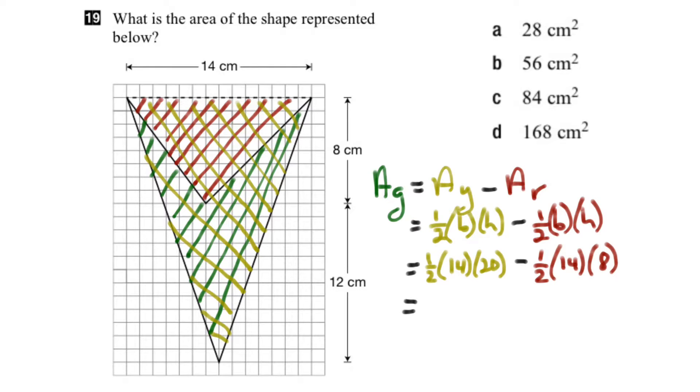And if we work this out, half of 14 is 7 times 20 is 140, minus half of 14 is 7 times 8 is 56. And 140 minus 56 is 84, and the units are cm squared.